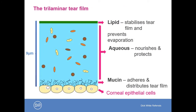The tear film is broadly thought to be divided into three layers — it is trilaminar in structure. The outer layer is a lipid fatty layer, and it is thought that this layer stabilizes the tear film and prevents evaporation. We then have a middle aqueous layer which occupies about 90% of the tear film and is arguably the most important, as it nourishes and protects the ocular surface. Finally, we have the innermost mucin layer, which is responsible for adhering and distributing the tear film.